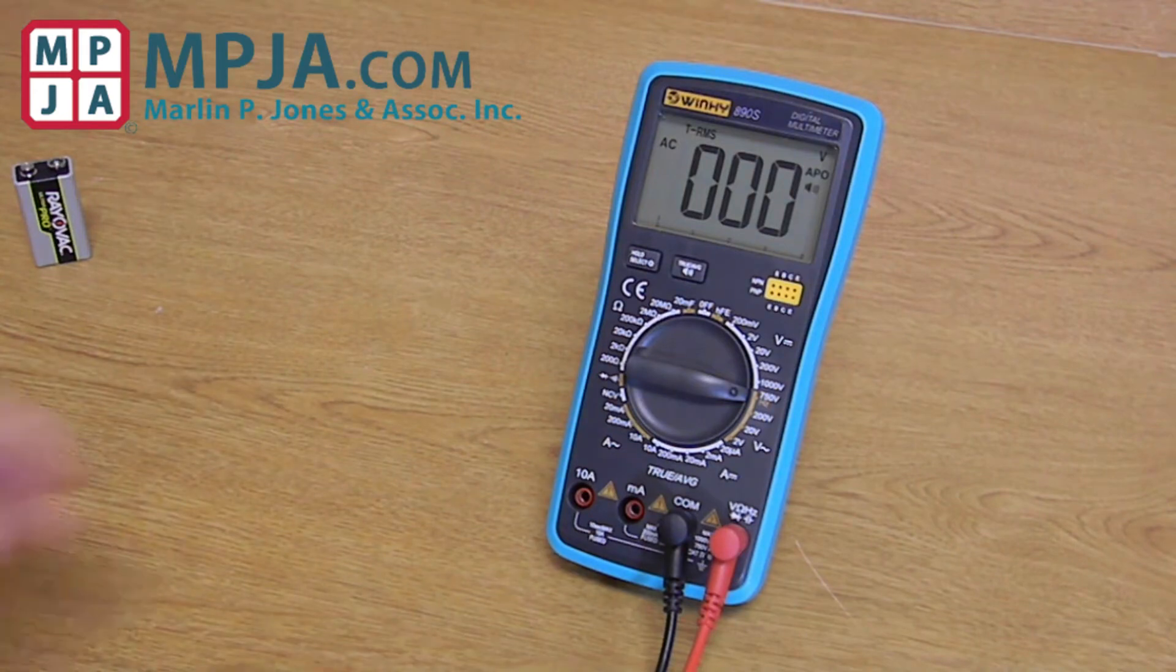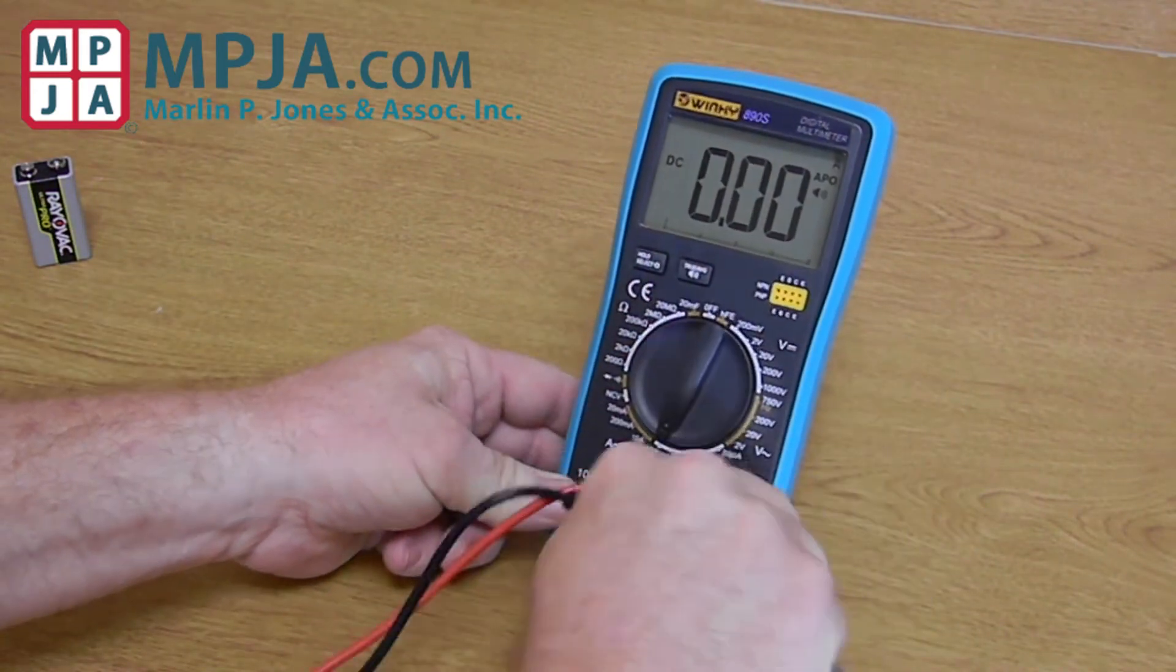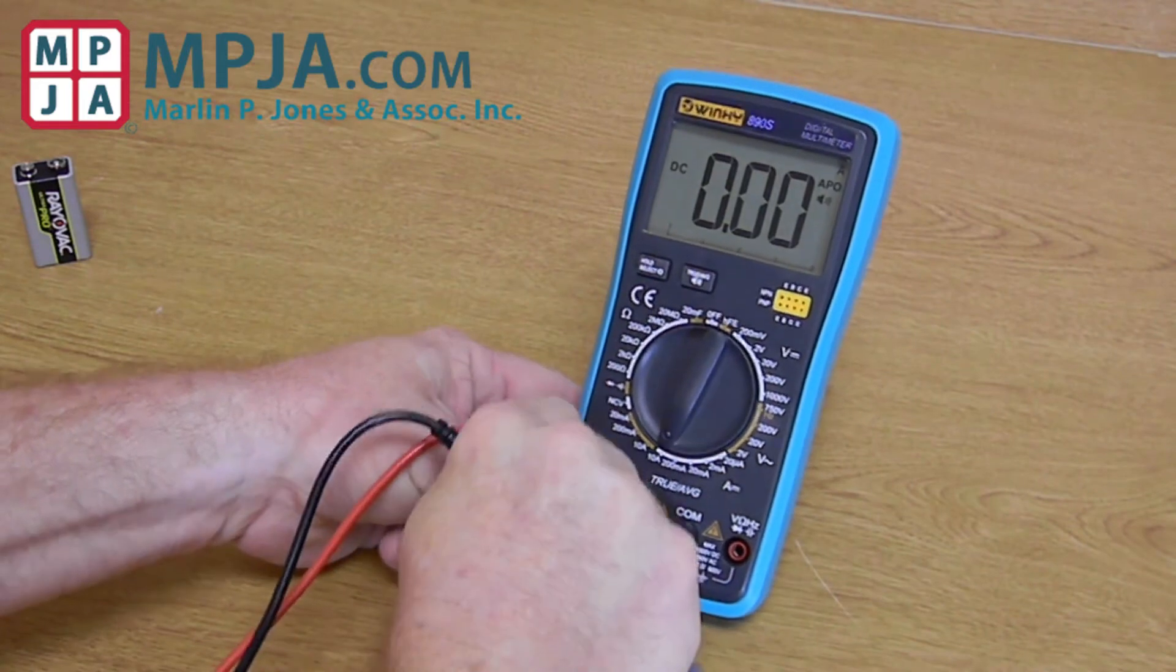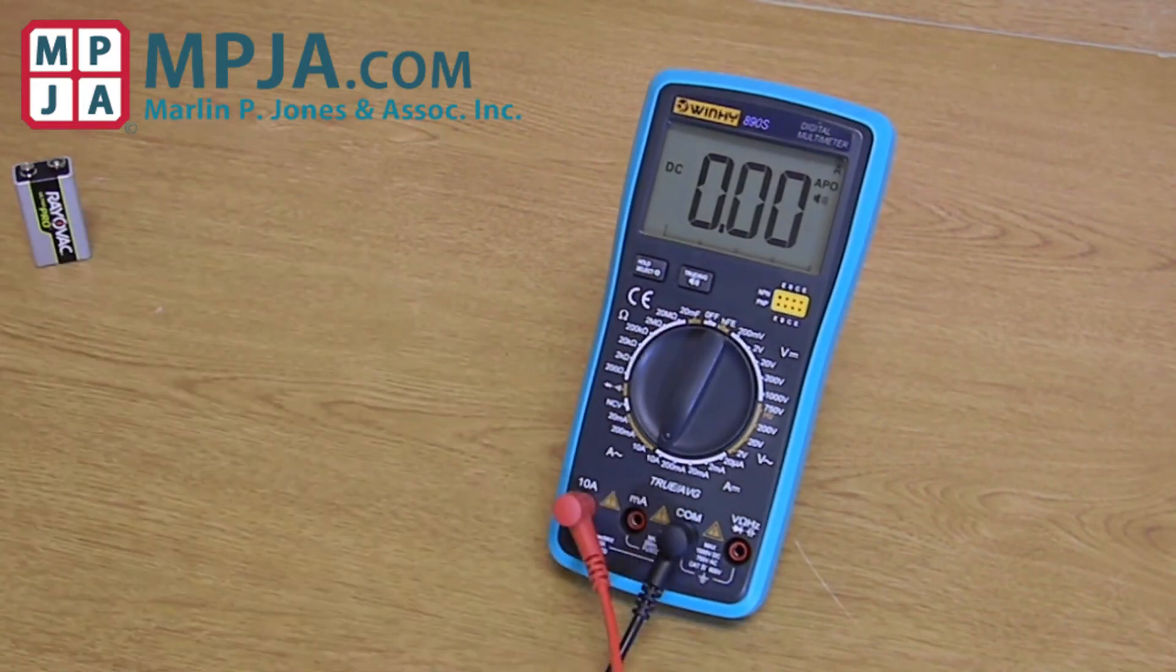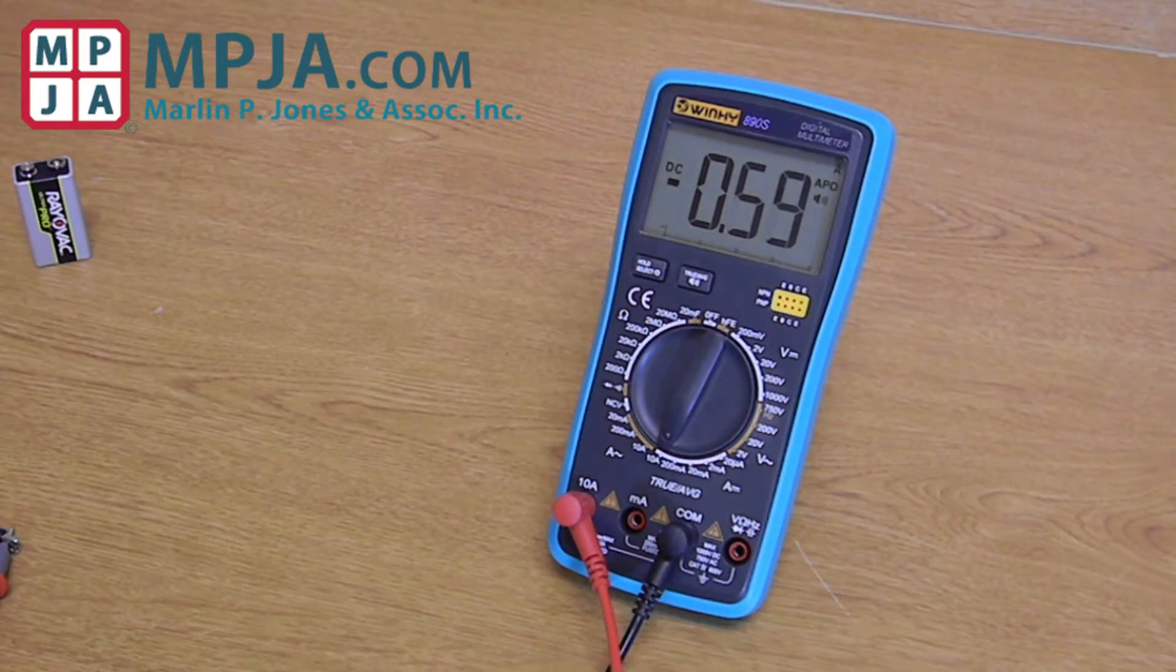Then we're going to the DC current. Now I have a fan and a little bench top power supply off screen just to give us a small load.